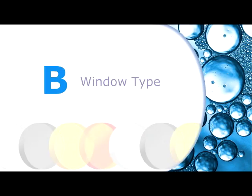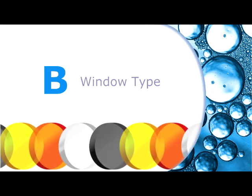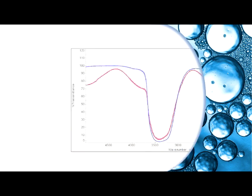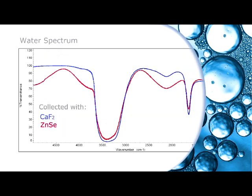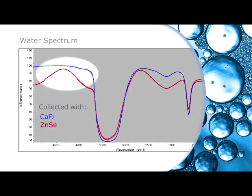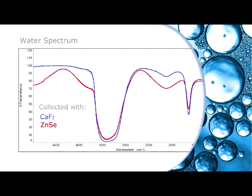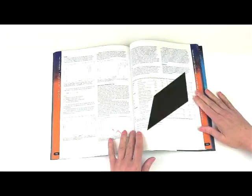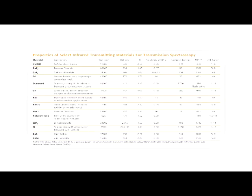The window type will depend upon the spectral range of interest, the solubility of the window, and the pH tolerance. Due to the parallelism of the windows, interference fringes may appear in the spectrum. This is caused by constructive and destructive light interference at the cell window surface. Choosing a window with the smallest refractive index will minimize the magnitude of these interference fringes. In Pike's Transmission Theory application note, available in our catalog and on our website, you'll find a convenient table summarizing window properties, transmission region, and refractive index.